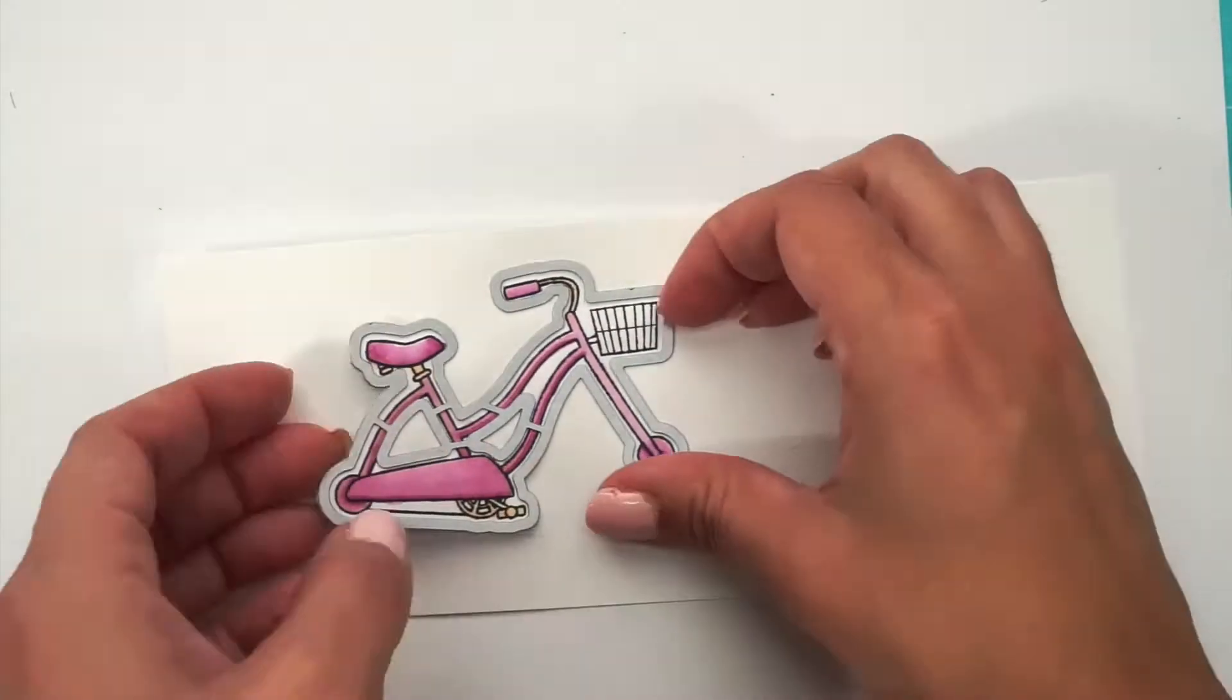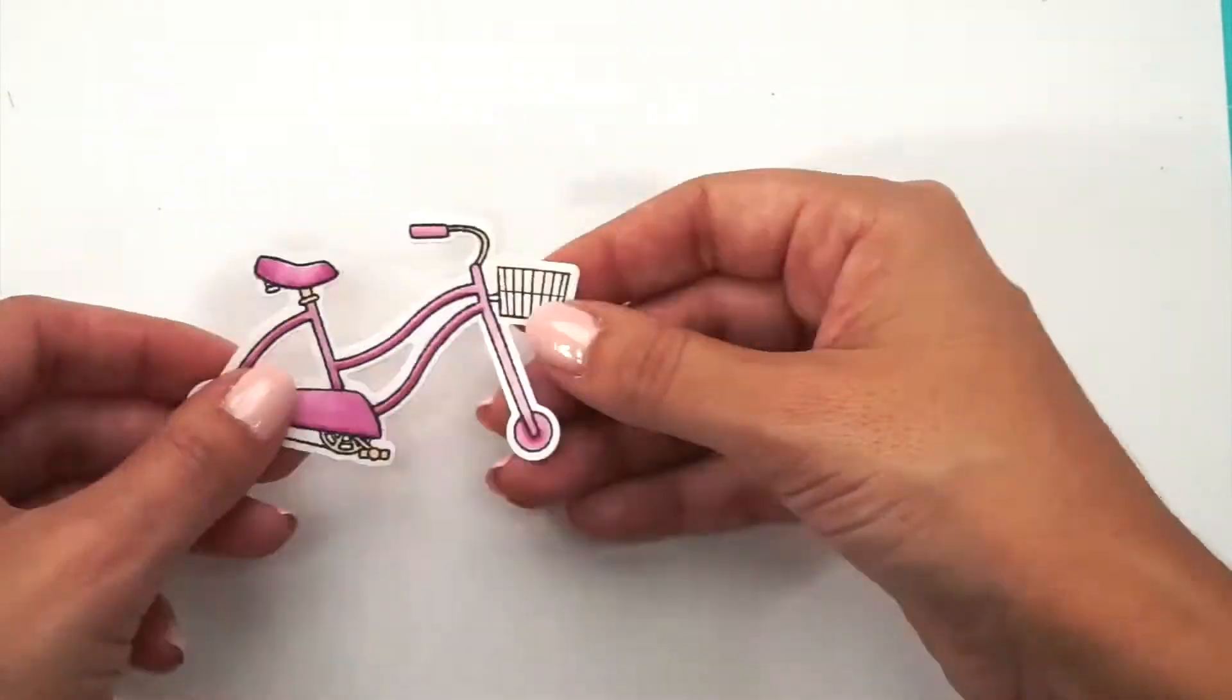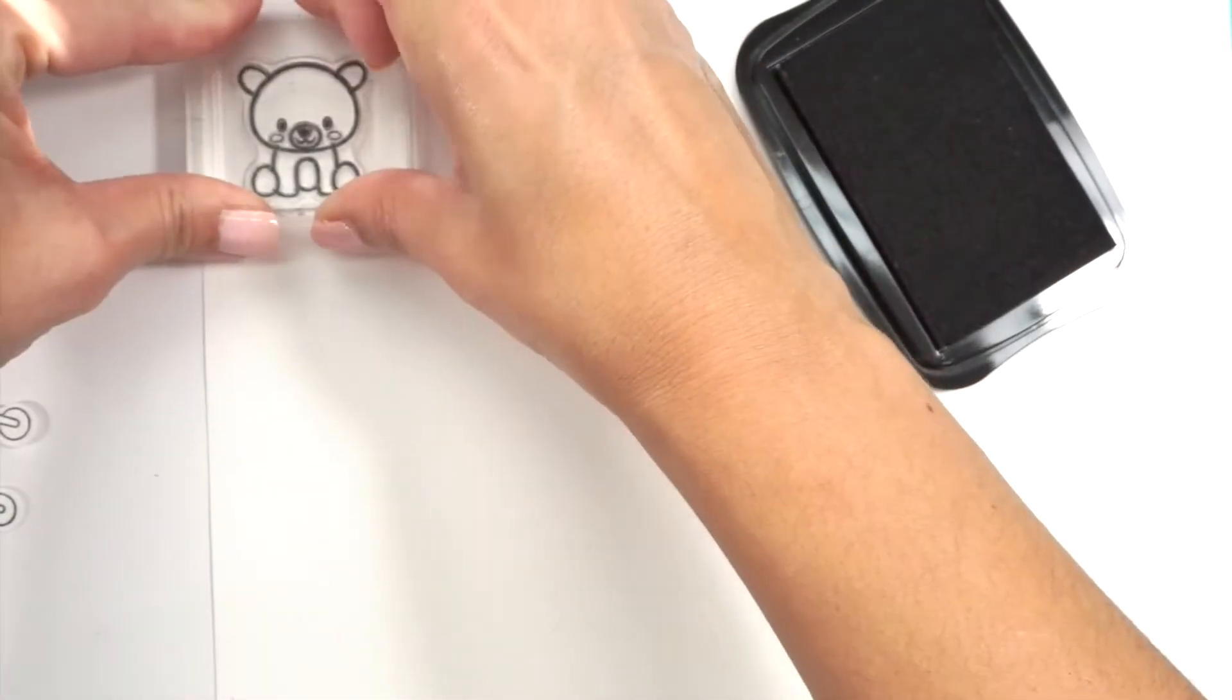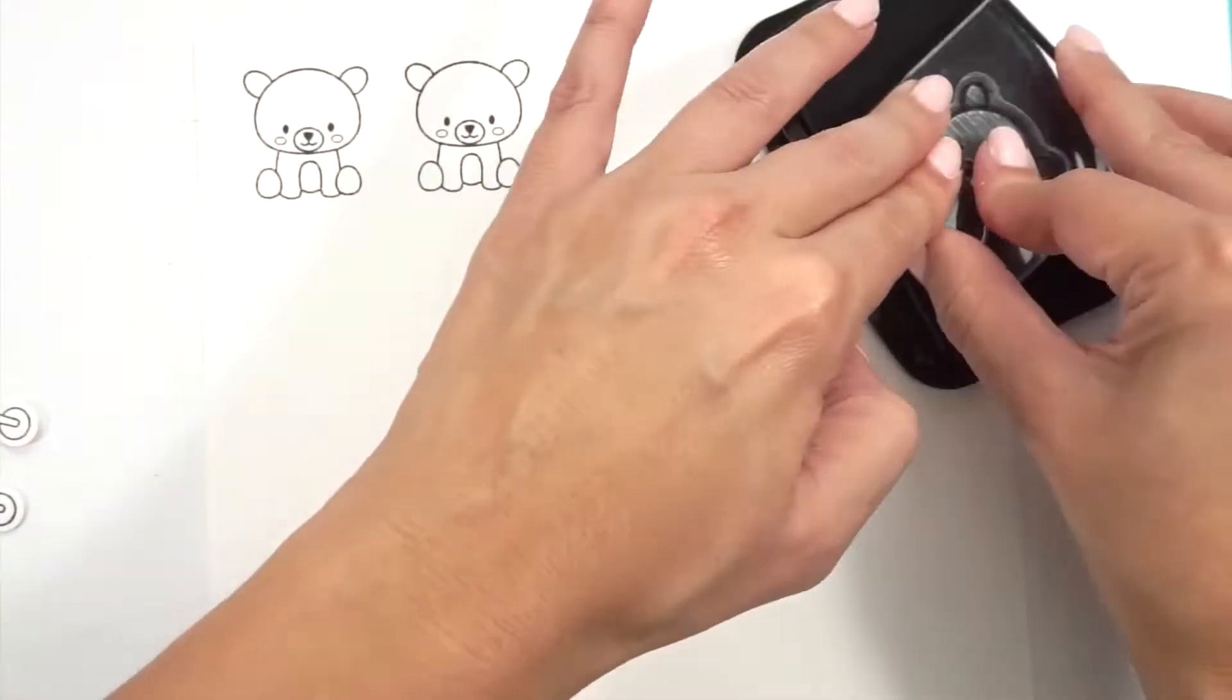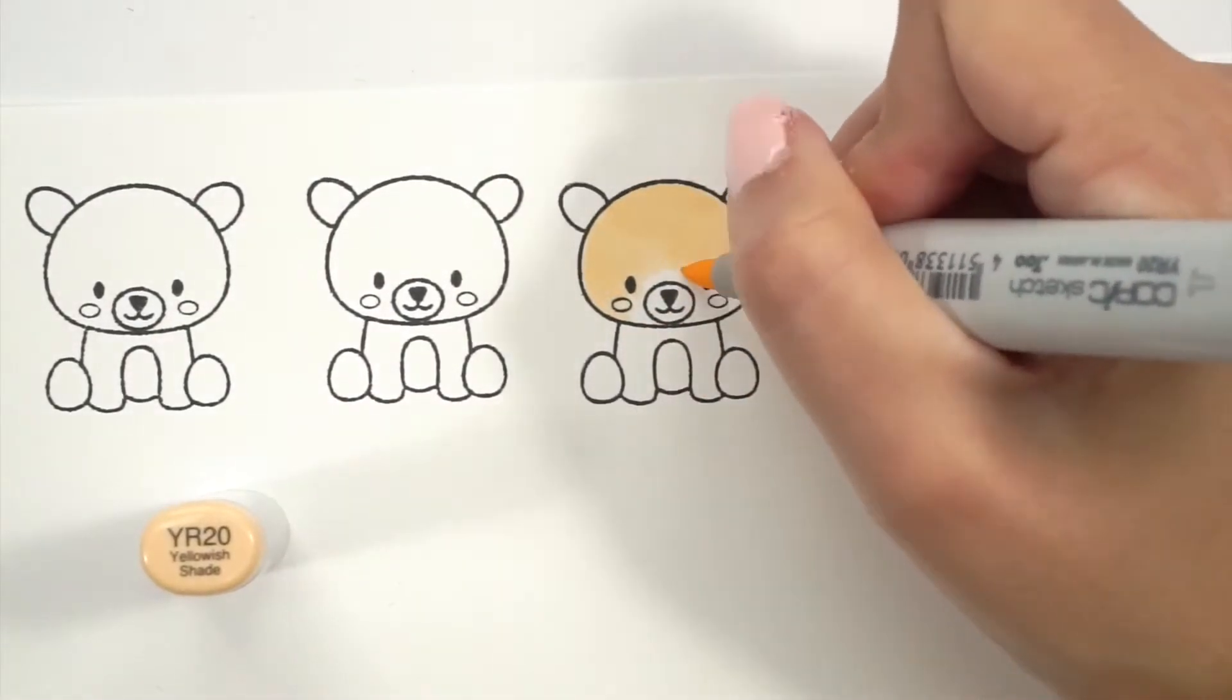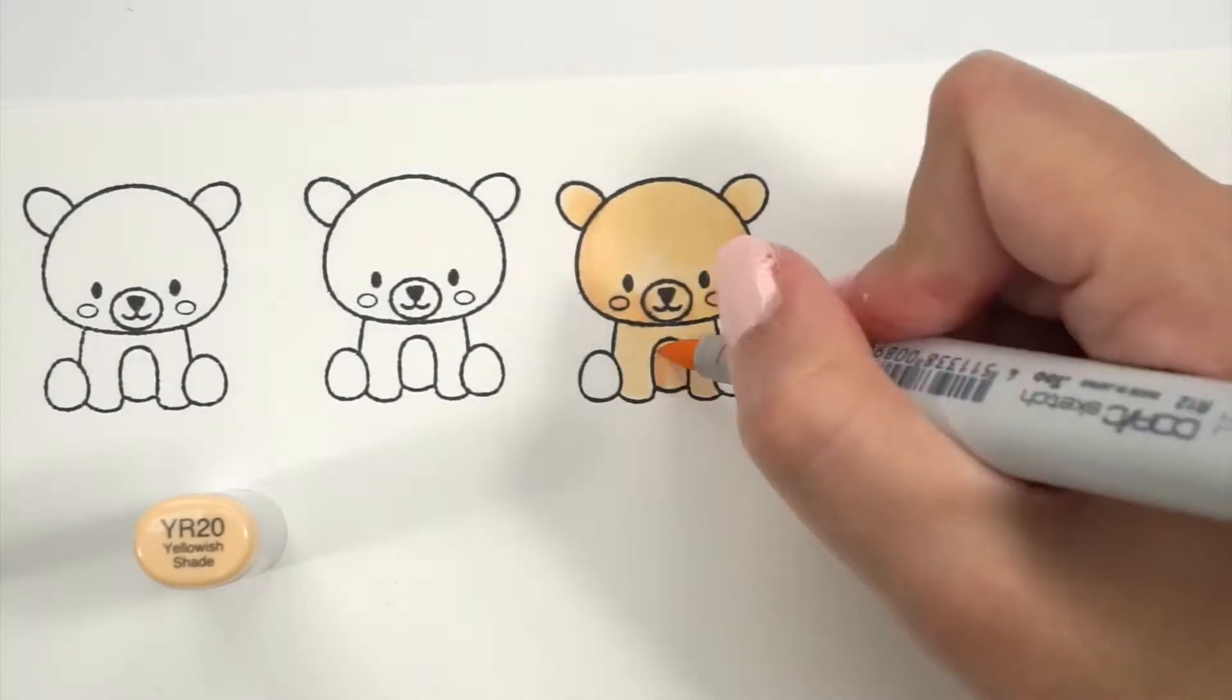So to start the project, I like to start with the bicycle and the teddy bear, also the sentiment. So everything that's going to be in the front of the card, I start coloring and die cutting. So I have all the pieces together and I know how I'm going to place the bicycle in the front of the card to get ready to die cut the wheels.